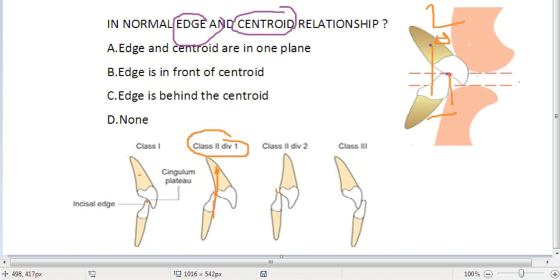In Class 2 div 2, your edge is going to be definitely behind your centroid. Always remember, in Class 2 div 2, your edge is going to be behind your centroid.